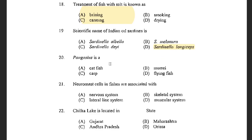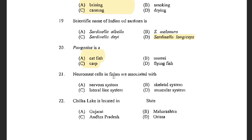Next question: Pangasius is a — options are Catfish, Maral, Carp, and Flying fish. The answer is Catfish. Next question: Neuromast cells in fishes are associated with — options are Nervous system, Skeletal system, Lateral line system, and Muscular system. The answer is Lateral line system. These neuromast cells are present in the lateral line system only.